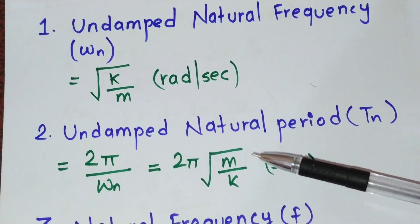The natural frequency wn is equal to root k by m, where k is stiffness and m is mass, and its unit is radian per second. Undamped natural period Tn equals 2π root m by k, and its unit is in seconds. Again, k is the stiffness and m is the mass.